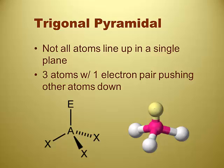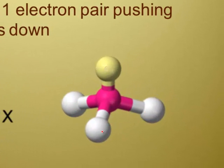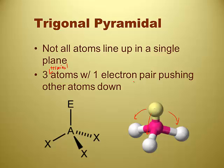We've got trigonal pyramidal. And not all the atoms line up in a single plane in trigonal pyramidal. Notice the same idea. It's one central atom with three atoms surrounding it, three terminal atoms. But we've got a pair of electrons up here. And this lone pair is causing the rest of the atoms to get bent away from it. So this is trigonal pyramidal. And this is different from trigonal planar because this one forms a pyramid shape, whereas trigonal planar forms a flat one.